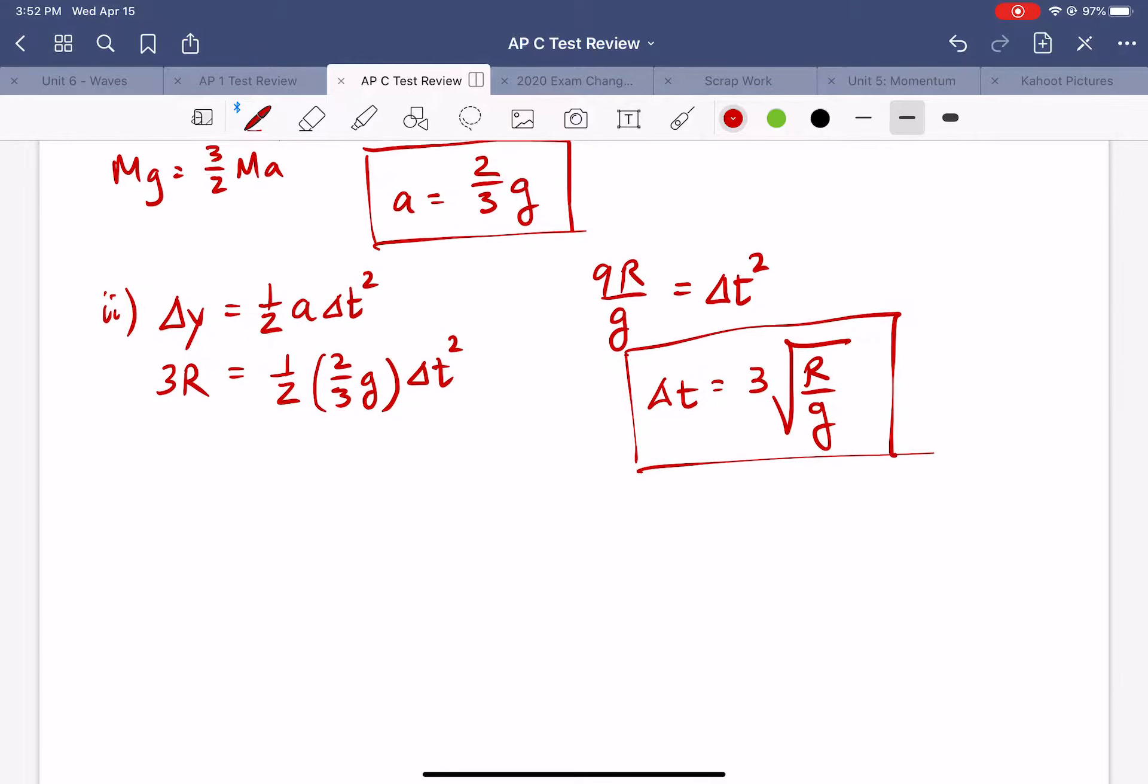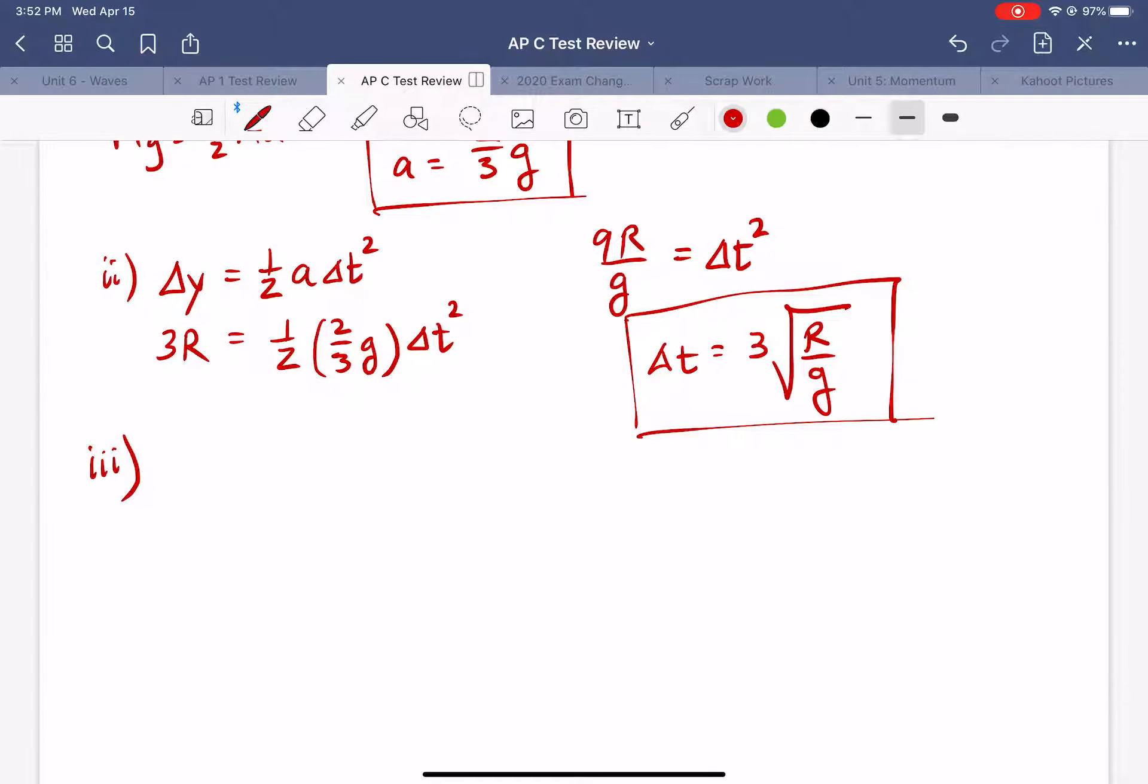All right lastly we have a question about the rotational kinetic energy. Okay so as this thing falls it's going to convert gravitational potential energy into kinetic energy. Actually let me write it this way. But that kinetic energy involves what we might call translational kinetic energy and rotational kinetic energy. All right so the question is how do we figure out what fraction of that potential energy becomes rotational kinetic energy?